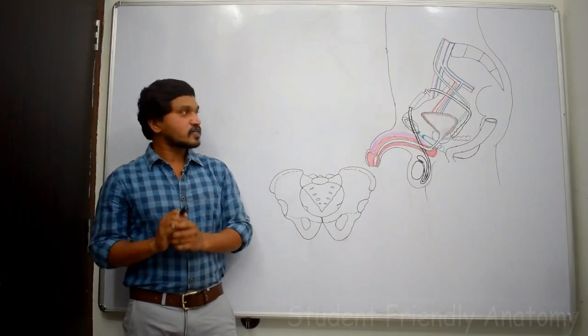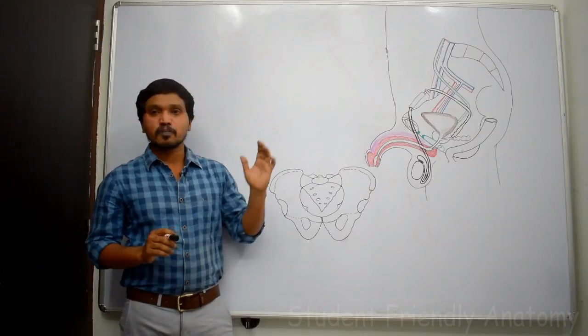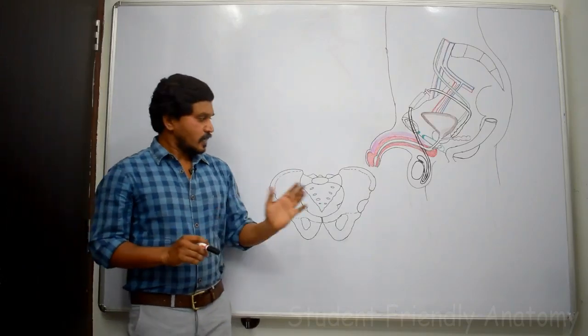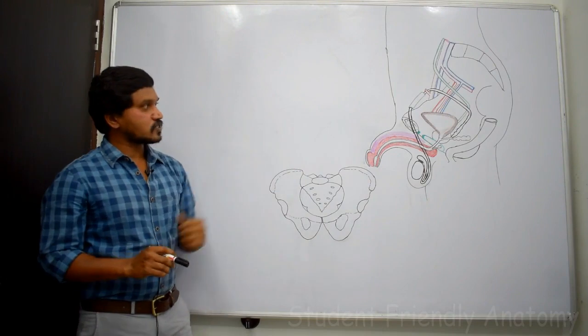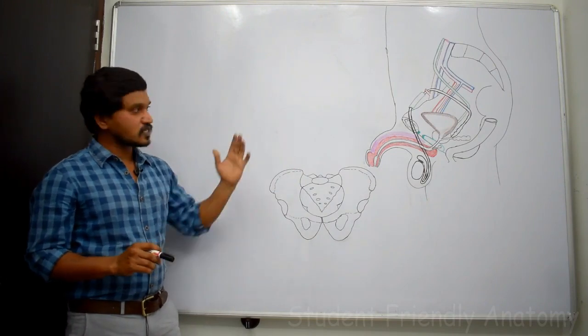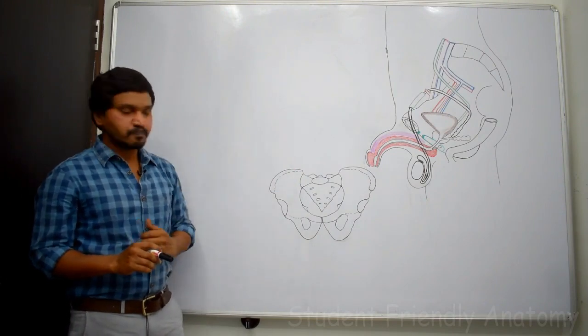In this session, we will try to discuss male external genital organs. Here I have drawn few structures. Let me introduce those structures which I have drawn.